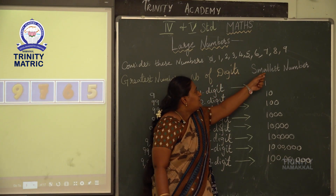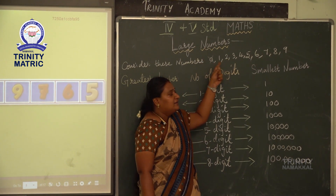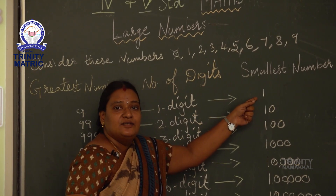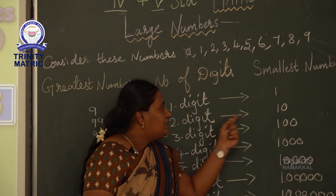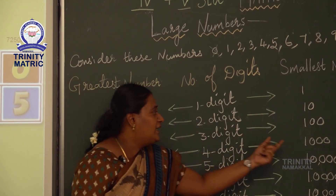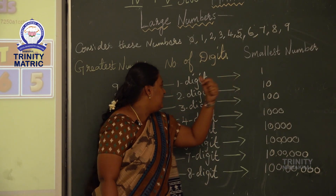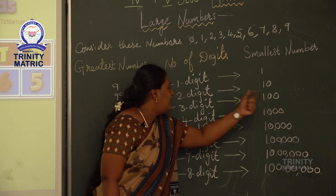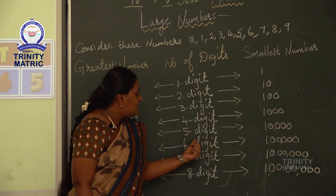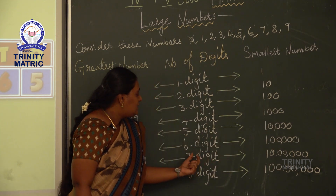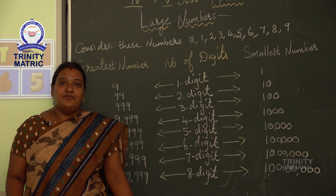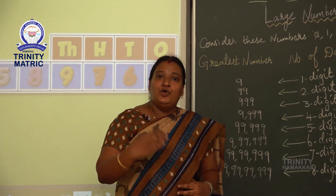The smallest 1-digit number is 1, because we should not take 0. Smallest 2-digit number is 10. Smallest 3-digit number is 100. Smallest 4-digit number is 1,000. Smallest 5-digit number is 10,000. Smallest 6-digit number is 1 lakh. Smallest 7-digit number is 10 lakh. Smallest 8-digit number is 1 crore. So in 4th and 5th standard, you are going to study up to 1 crore.